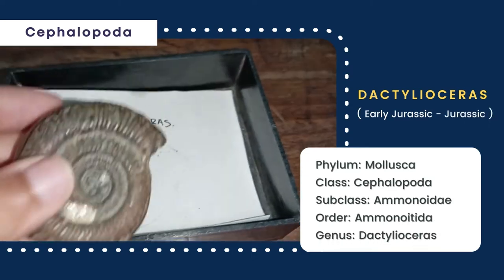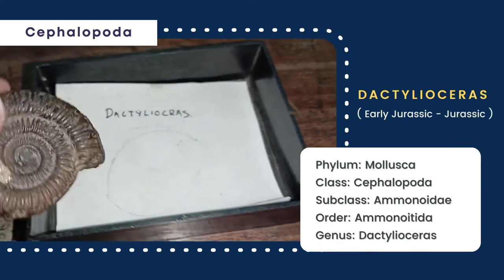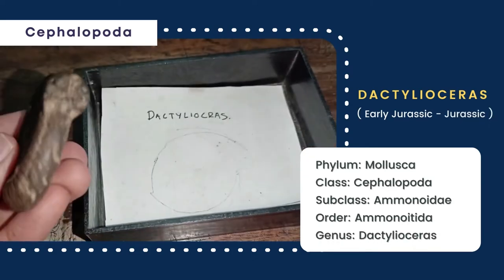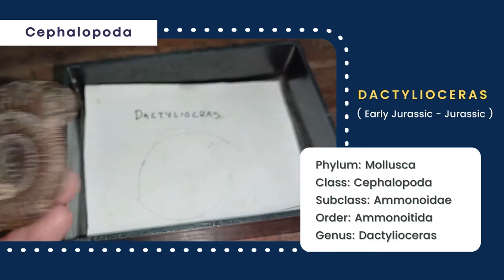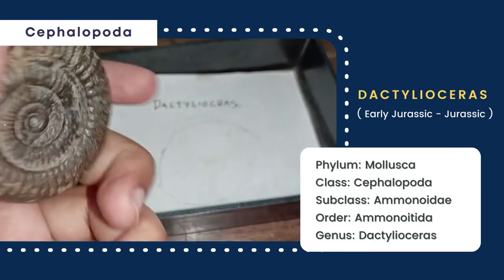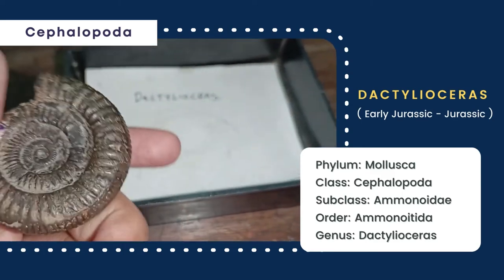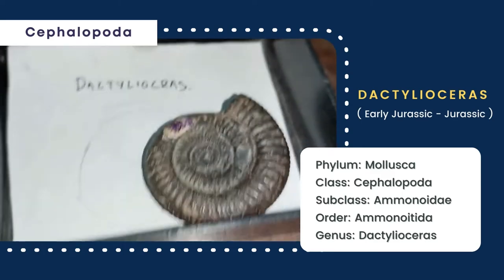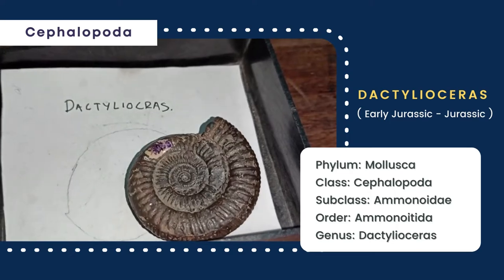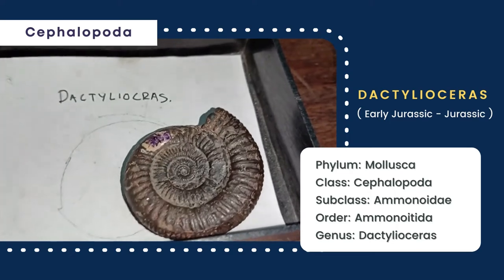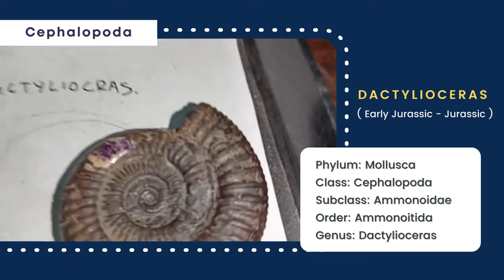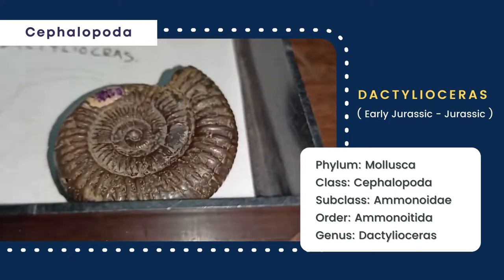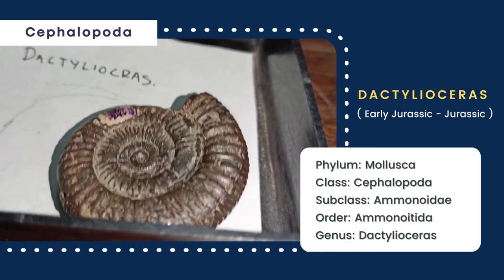Lastly, this is dactyloceras, whose shell is flattened and rounded in shape and contains numerous whorls. The umbilicus is small and rounded, and sutures with saddles and lobes are present.